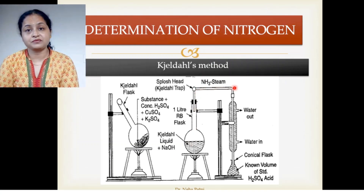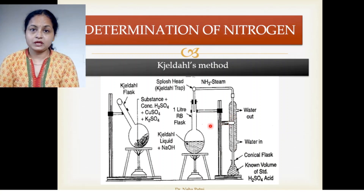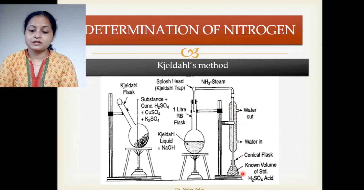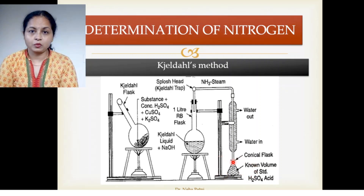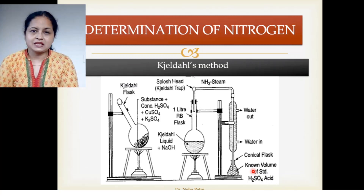Since the ammonia is in vapour form, we need to liquify it, so we use a condenser. Water acts as a coolant, the ammonia liquifies, and it falls dropwise into a container. In that conical flask, you already have a known volume of standard acid — for example, 10 ml of 1 normal H₂SO₄.